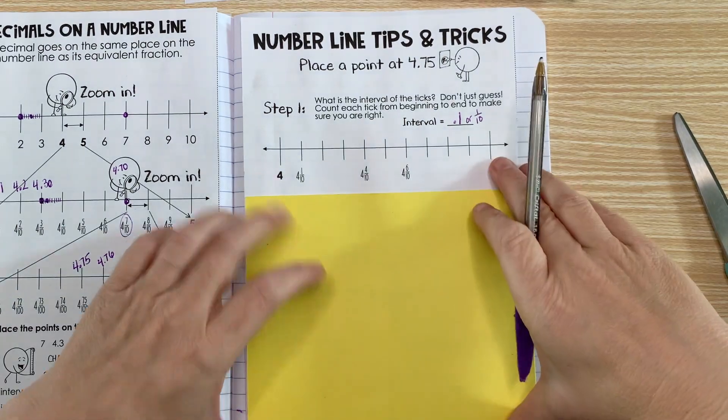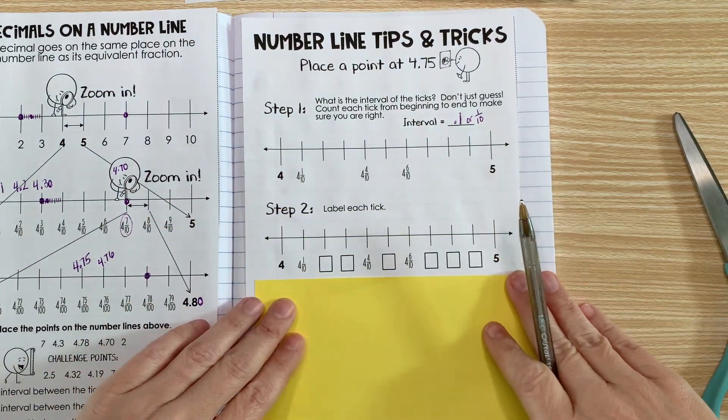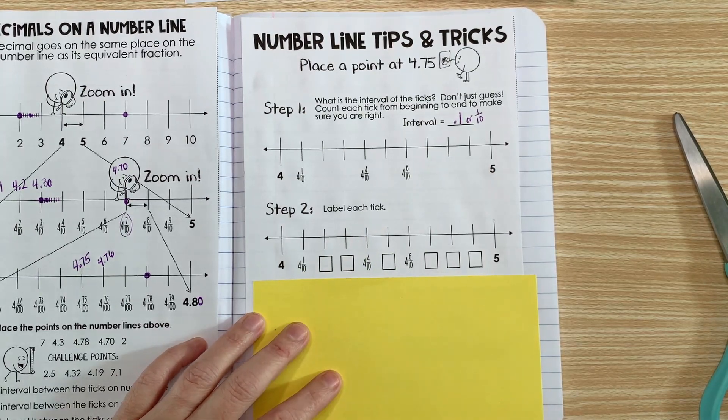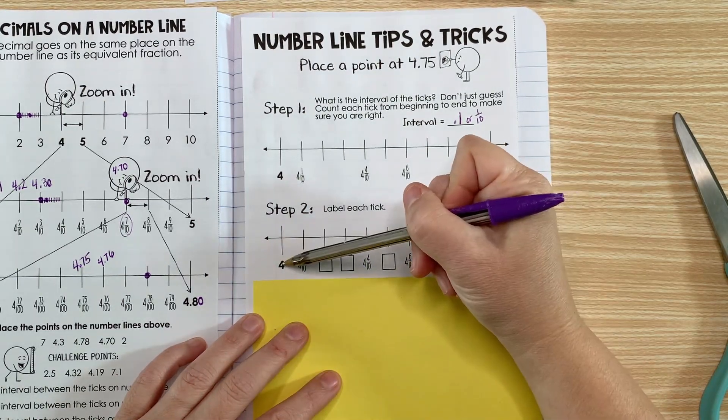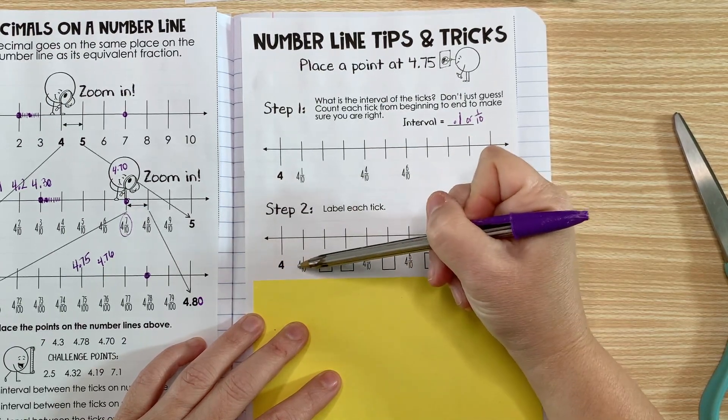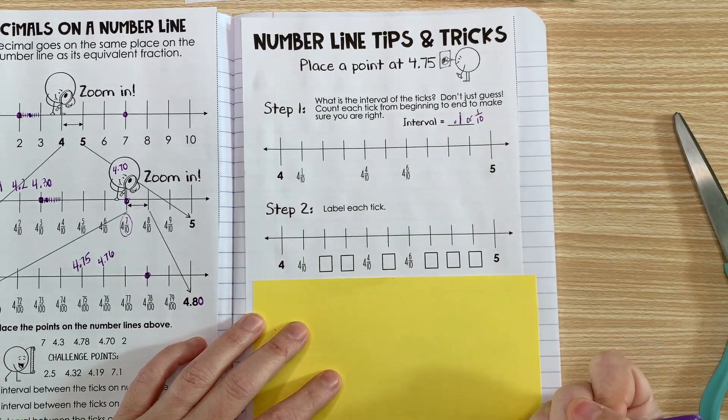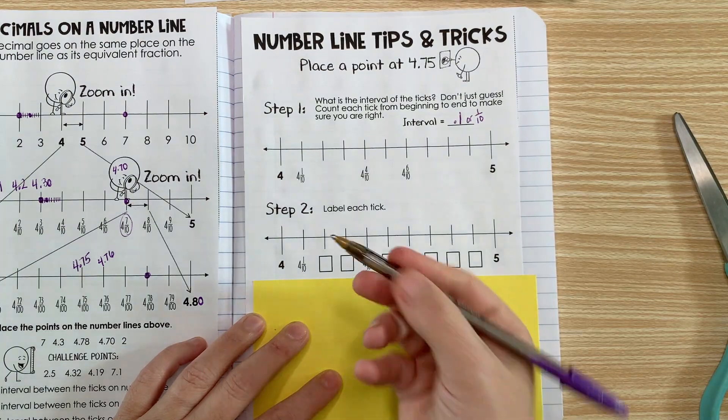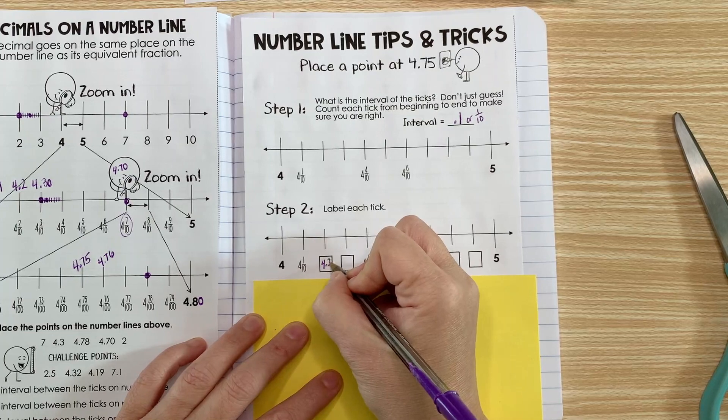Always double check your work. Step number two is to label each tick. The ones that aren't labeled, we're going to go ahead and label. Here we're at 4, and here we're at 4.1. The next one is 4.2. It's easier to write the decimal, so I'm going to write it as a decimal.